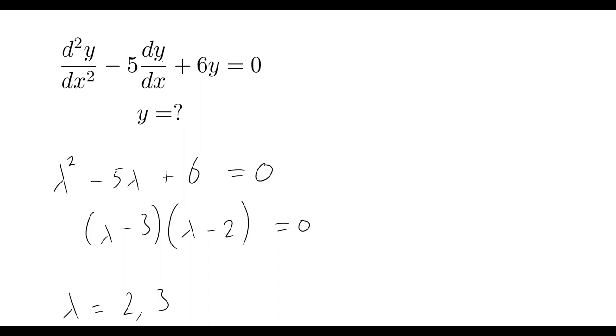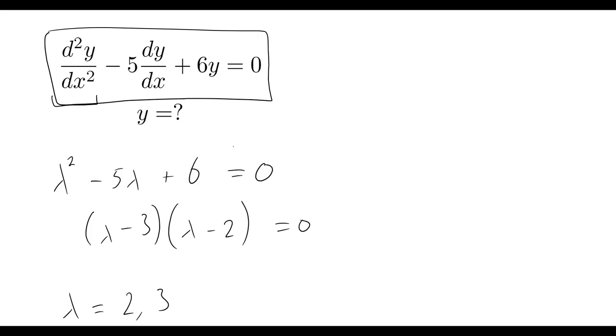You can go through and quickly differentiate that once to get dy/dx, and then differentiate that once more to get our first term. When you start putting that all back into this equation, you'll get that the entire left hand side will equal zero. So that's a quick way that you can check that this is the correct solution. By solving the characteristic equation of this ODE, we've managed to come up with a solution where y equals c₁e to the 2x plus c₂e to the 3x.